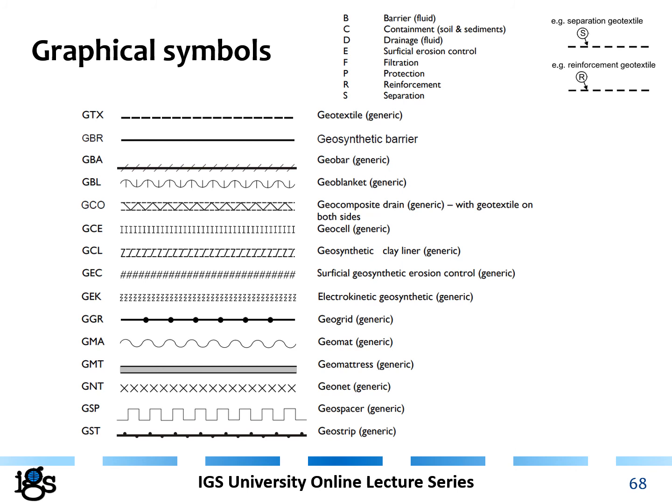When using drawings showing geosynthetics, it is good practice to clearly identify the geosynthetic with a specific symbol and/or abbreviation. IGS, ISO, and ASTM all have documents with geosynthetic abbreviations and graphics for use in drawings. The geosynthetic can be marked with an abbreviation of its type and main function, circled and arrowed to the item in the drawing. There should always be a legend with full wording, as some abbreviations may not be known by the user.